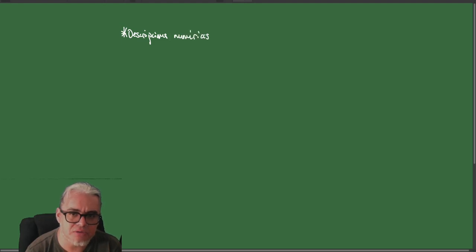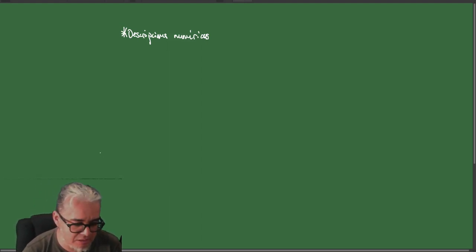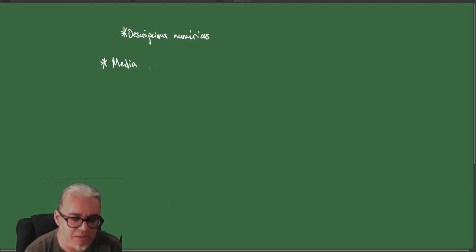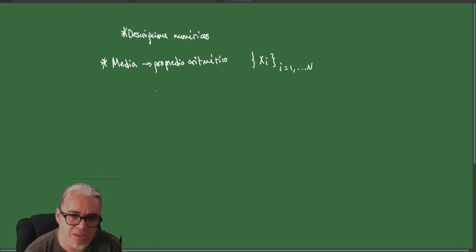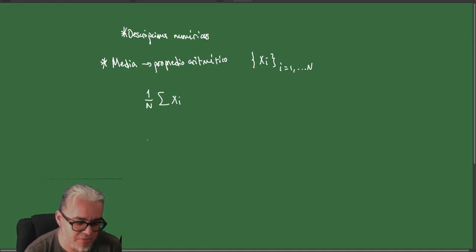Vamos a ver algunas descripciones numéricas para los datos. Tenemos un conjunto de datos y siempre podemos preguntarnos por varias cosas. Una de ellas es la media aritmética o promedio aritmético. Tenemos un conjunto de datos X_i con i desde 1 hasta N suficientemente grande. La media es simplemente 1/N por la suma de los valores X_i: es un promedio aritmético.